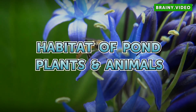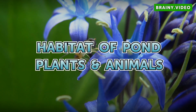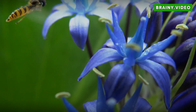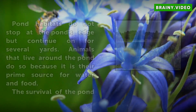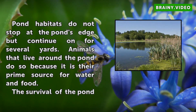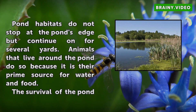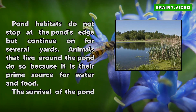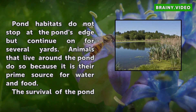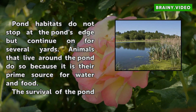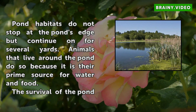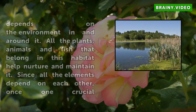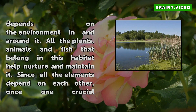Habitat of Pond Plants and Animals. Pond habitats do not stop at the pond's edge but continue on for several yards. Animals that live around the pond do so because it is their prime source for water and food. The survival of the pond depends on the environment in and around it.